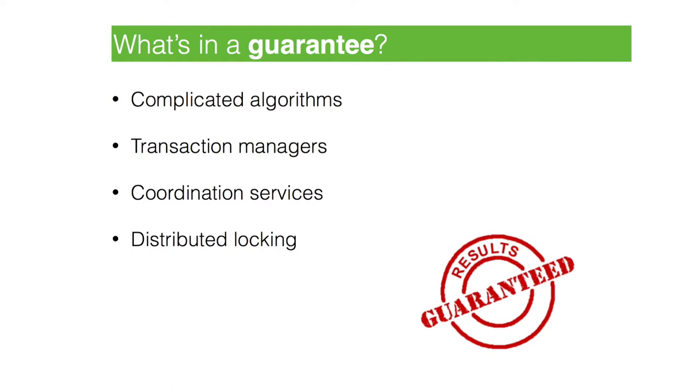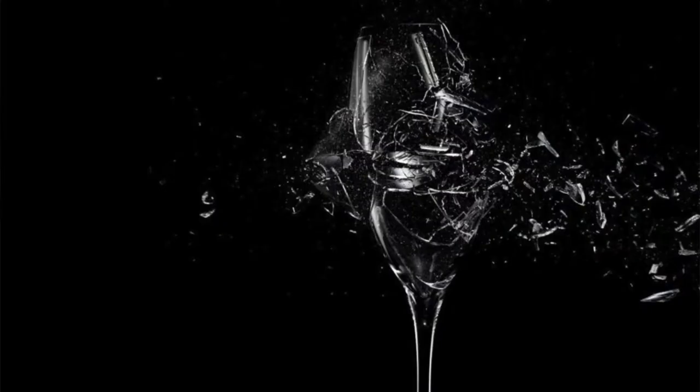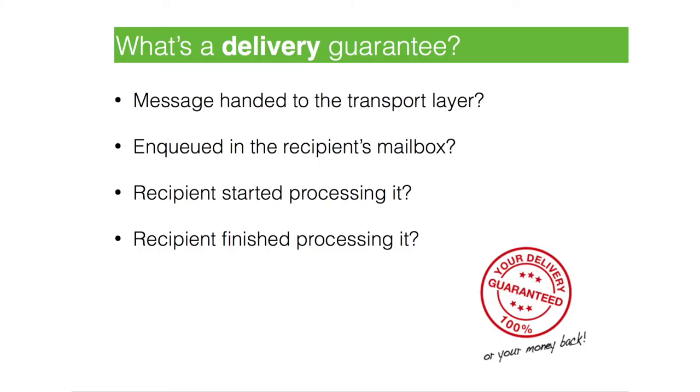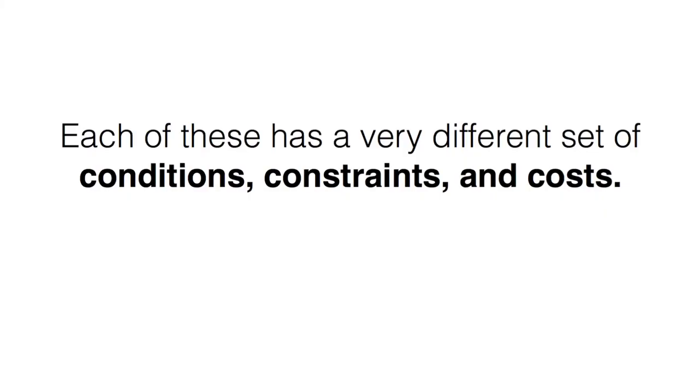We have to ask ourselves what it takes to provide those types of guarantees. It usually involves complicated algorithms, transaction managers, coordination services, distributed locking — things that are, by the way, extremely fragile. Things you probably don't really want to depend on, but we do it anyway. When we're talking about messaging, we're usually interested in delivery guarantees. But what does that even mean? Does it mean a message was handed to the transport layer? Was it enqueued on some mailbox? Did somebody start processing it? Did they finish? There are all these different definitions, each with a very different set of conditions, constraints, and costs.